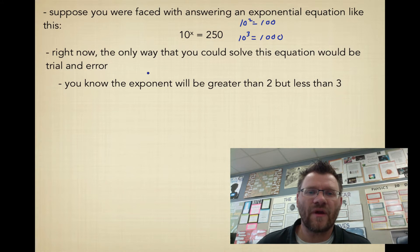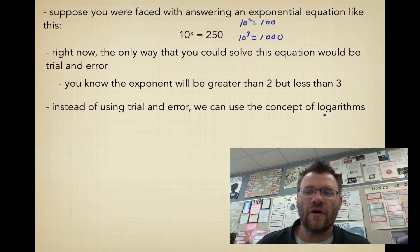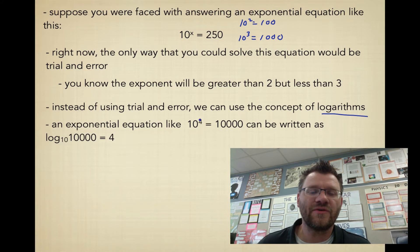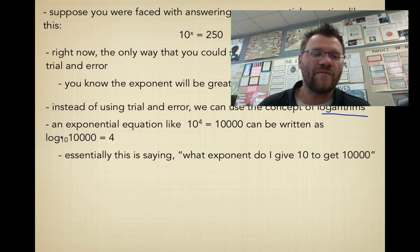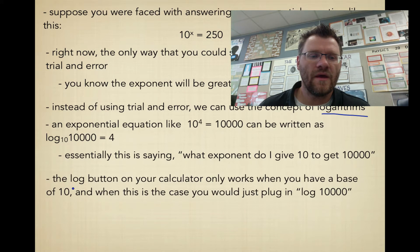So instead of using trial and error, we use something called logarithm. So an exponential equation like 10^4 = 10,000 can be written as log₁₀(10,000) = 4. So log₁₀, here's your base from over here. Here's your answer, which is 10,000. And here's your exponent. So essentially what this is saying is what exponent do I have to give 10 to get 10,000? So that's why the answer is 4. The log button on your calculator only works when you have a base of 10. And when this is the case, you would just plug into your calculator log 10,000. You might want to just check that on your calculator so you know how to use it.